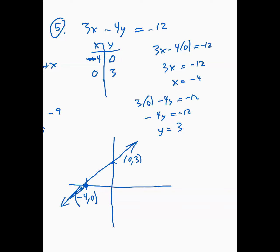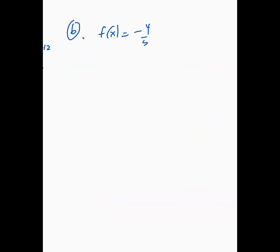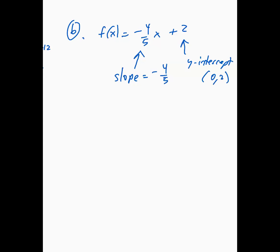Number 6 says f of x equals negative 4 over 5 times x plus 2. This is in slope-intercept form. The number beside the x is called the slope, so the slope is negative 4 over 5. The number that is not beside x is called the y-intercept, so the y-intercept is 0 comma 2. Then we have to graph this linear function.